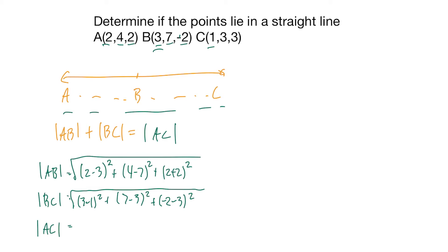For AC, 2 minus 1 squared plus 4 minus 3 squared plus 2 minus 3 squared.